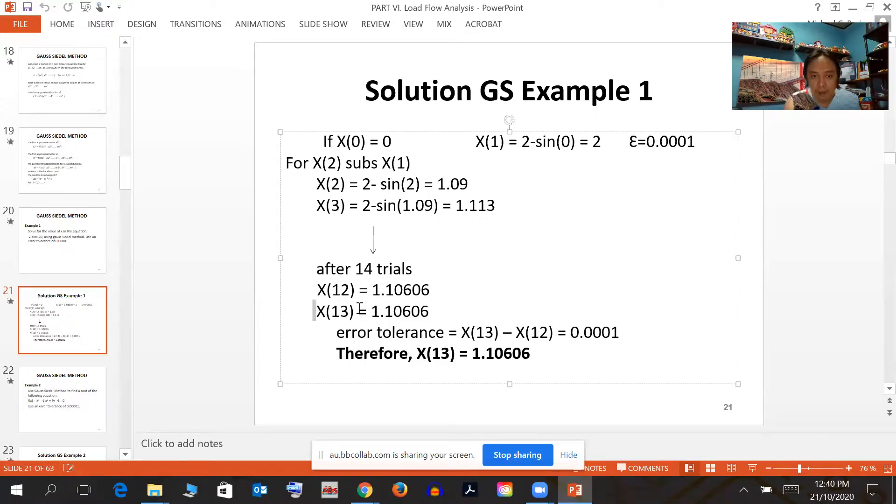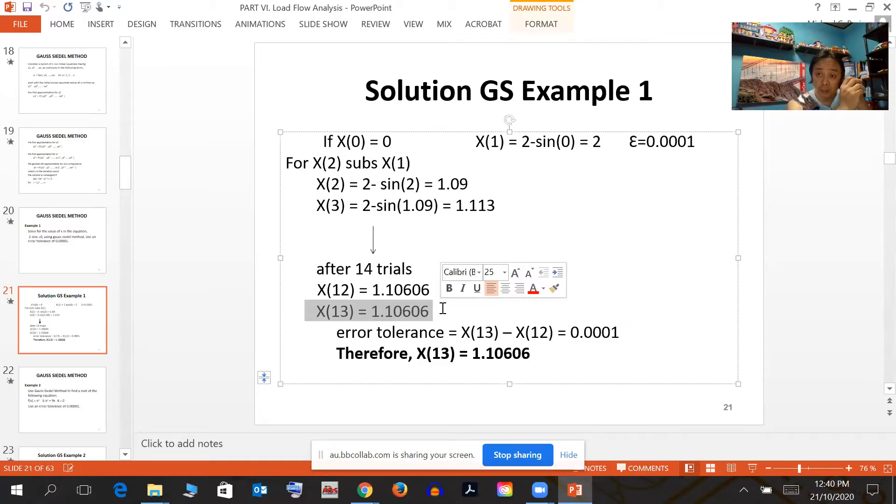The problem with Gauss-Seidel is memory allocation. As the equation gets larger and you have many substitutions, your computer's memory allocation slows down. But now with high memory capacity CPUs and software like MATLAB, this is very feasible. The most important here is that x_13 minus x_12 matched the epsilon, and thus the final answer is 1.10606.